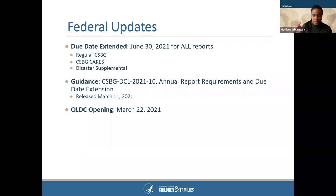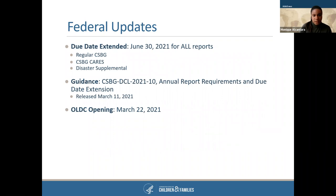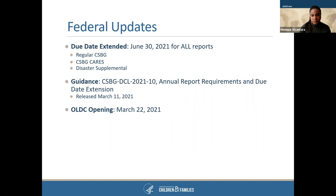We did extend the due date, as we announced last week at the NASCAS conference as well as in our CSBG DCL 2021-10. The due date was extended to June 30th, 2021 for all three reports: regular CSBG, CSBG CARES, and the Disaster Supplemental. We also released guidance, CSBG Dear Colleague Letter DCL 2021-10, Annual Report Requirements and Due Date Extension. This was released last Thursday, March 11th, and is available on our website. It also includes reminders and refreshers for what our requirements are for the three reports.